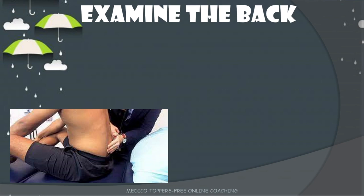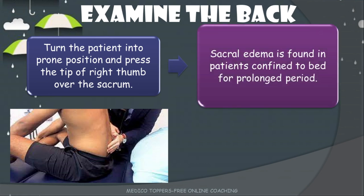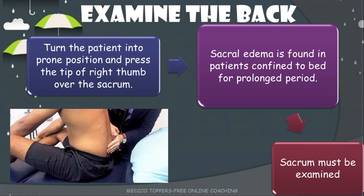If there is upper extremity involvement, we have to start from the wrist, then the lateral epicondyle of the elbow, then go for the sternum, and finally the forehead. When examining the back, whenever a patient is presenting with pedal edema, we should examine the back. We put the patient in a prone position and press the tip of the right thumb over the sacrum. Sacral edema is found mainly in patients confined to the bed, but we should examine the sacrum even in ambulatory patients.